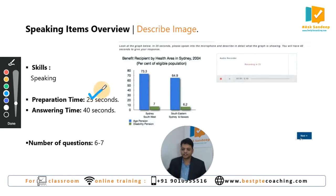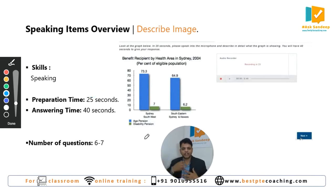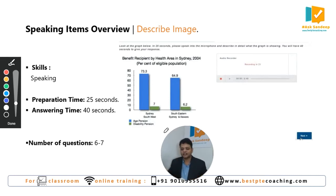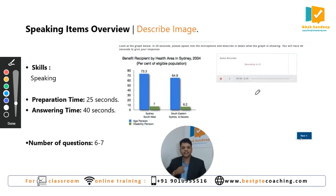After the image appears on the screen, you will be given 25 seconds of preparation time. In those 25 seconds, you have to scan the image, read it, and pull some important information from it. After that, in 40 seconds of answering time, you will see the screen saying 'recording' — that's when you start describing the image.